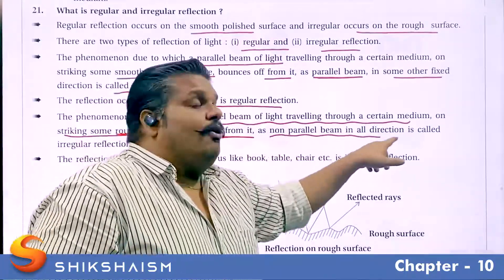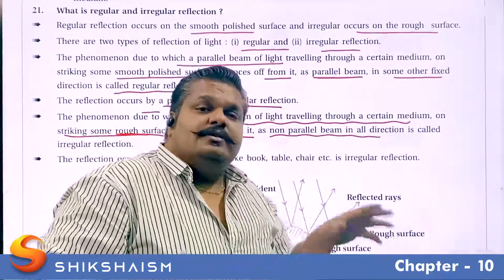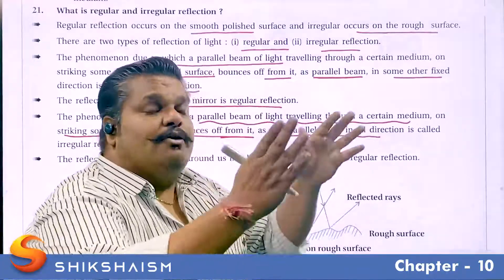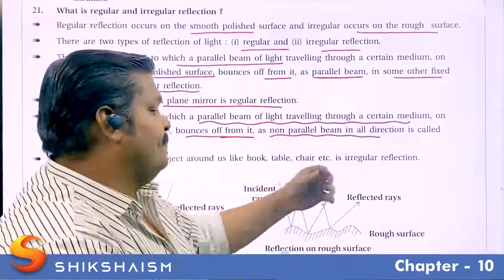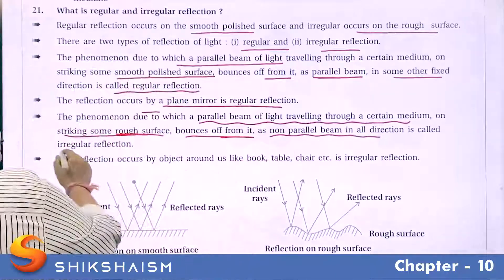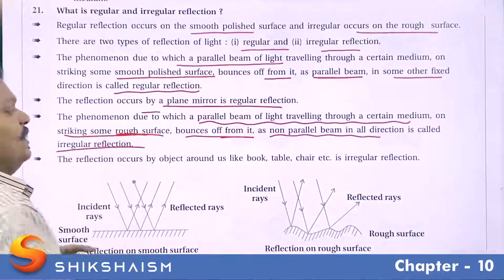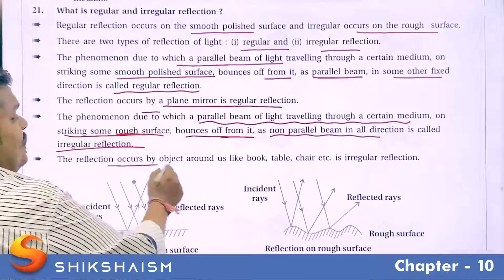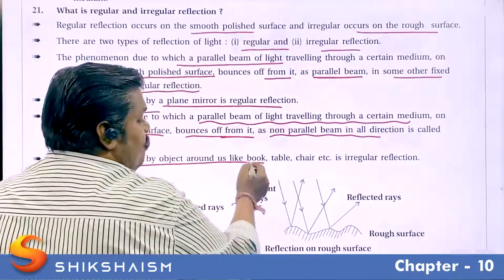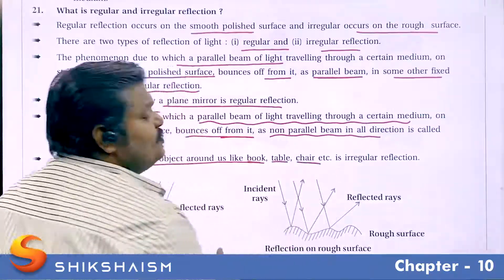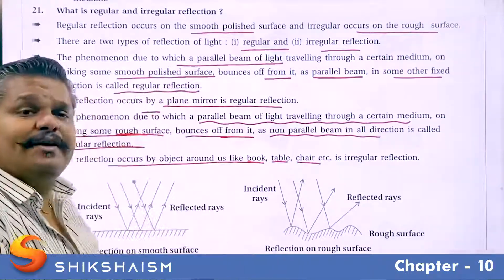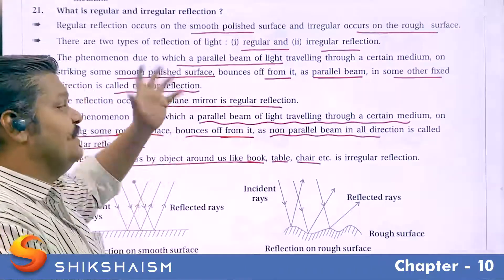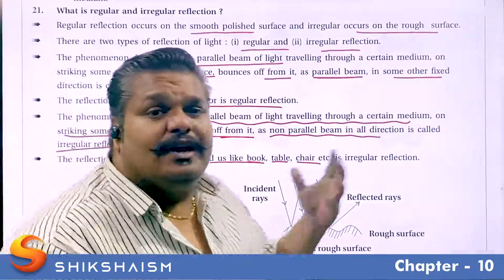The reflected rays are non-parallel; they are scattered in a wide area. This type of reflection is called irregular reflection. Examples include objects around us like a book, table, and chair — these are examples of irregular reflection.